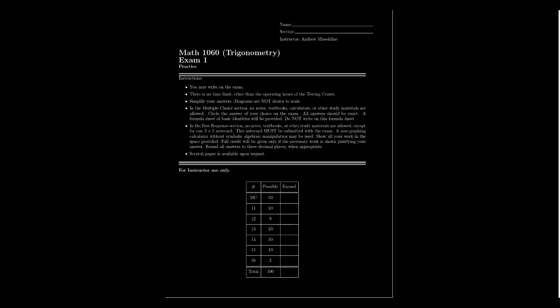In the multiple choice section, all answers will be exact because you'll select the correct answer. In the free response section, you have a calculator, so there might be times it's appropriate to round your answer — do so to three decimal places. But your best bet is to write all answers exact as much as possible. You don't actually need a calculator in the free response section; there aren't any questions on this exam that strictly require one. If you prefer, you can put all answers in exact form.